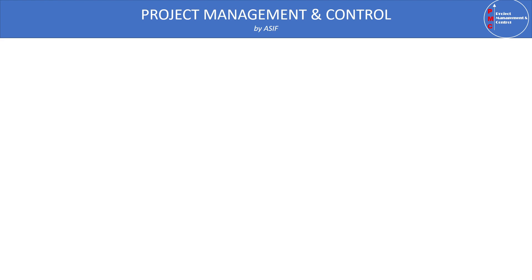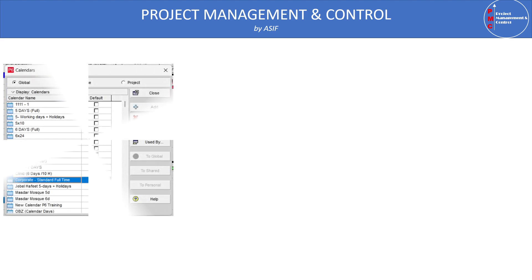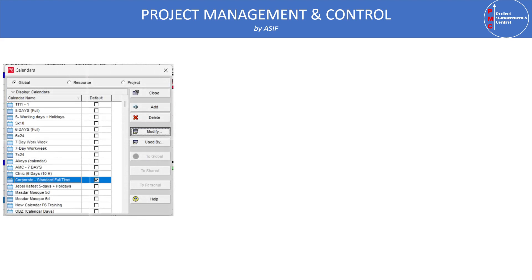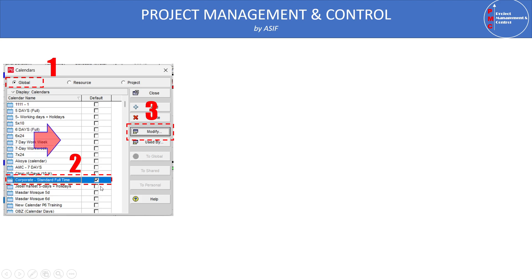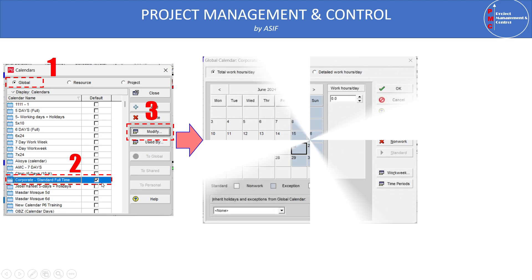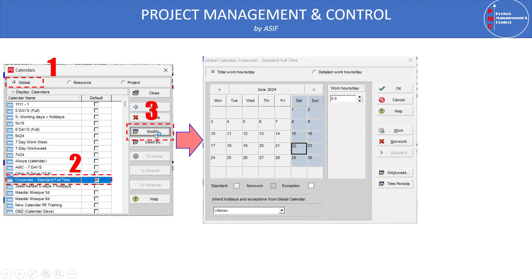When we open Primavera, we go to the Calendar option. In the Calendar option, three options are available: Global, Resource, and Project. Select Global and you will see many calendars listed, including a default one. Select the default calendar and then click Modify.